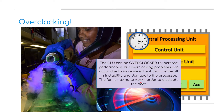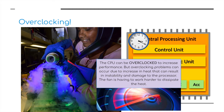Some people aren't happy with this and want to overclock the CPU to make it perform faster, to increase its performance. But overclocking problems can occur due to increases in heat that can result in instability and damage to the processor. You can see a lady here using her own intricate cooling system to keep the CPU cool — the fan is having to work harder to dissipate the heat. So it's not recommended, but it can be done.